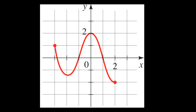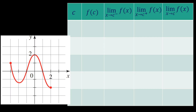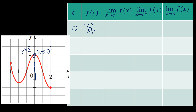On the next example, mapapansin natin ang movement ng graph. Mula sa y that is equal to 1, bumaba ang graph, at pataas papunta ang y sa 2, at bumaba ulit papunta sa negative 2. Kunwari, ang c natin ay 0. So papansinin natin ang left and right of 0. What is y when x is 0? So we have f of 0 — nandito ang point, at ang y dito ay equal to 2. So f of 0 is equal to 2.